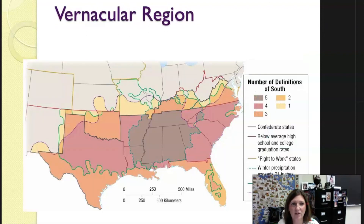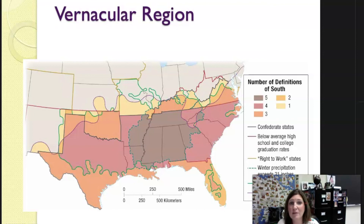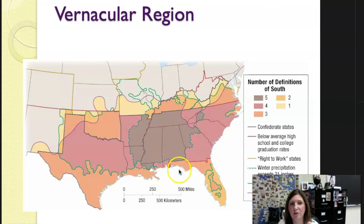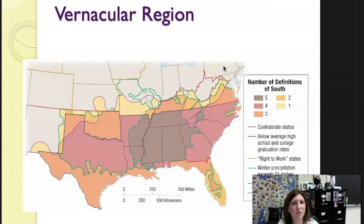A vernacular region example: the South is popularly distinguished as a distinct vernacular region within the United States. Sometimes we call it the South because of its mild climate, or because of crops that can be grown there that can't be grown elsewhere. Sometimes it's because it's part of the Bible Belt with the predominance of Baptist churches, or because it was the location of the Confederate states, or because of below-average high school and college graduation rates, or right-to-work states. All of these different factors create different borders for the region we call the South.